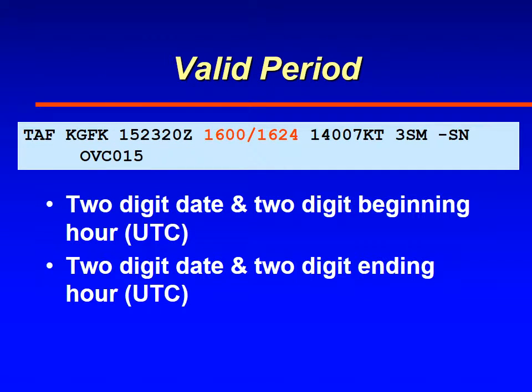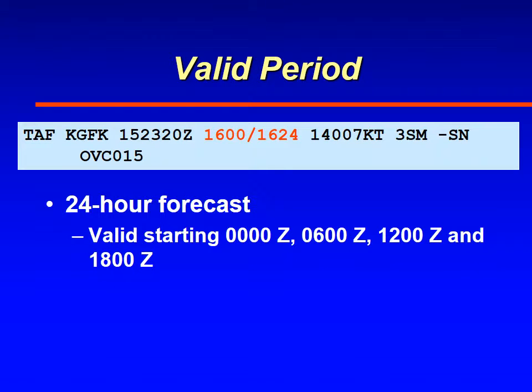Next comes the valid period. Most times the valid period is a 24-hour period. The first two numbers are the date and the next two numbers are the time at which the forecast starts, and then after the slash you'll have four numbers representing the date and time that the forecast ends. Of course all times are UTC. As mentioned, 24-hour forecasts start at 06, 12, and 18 Zulu.